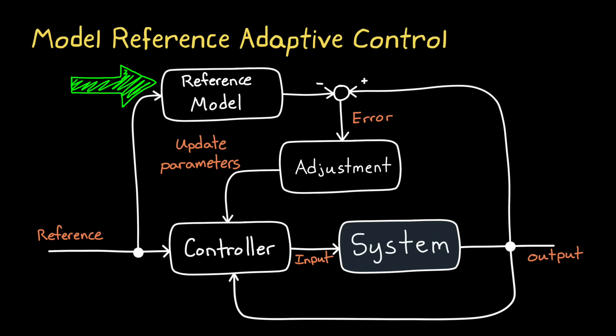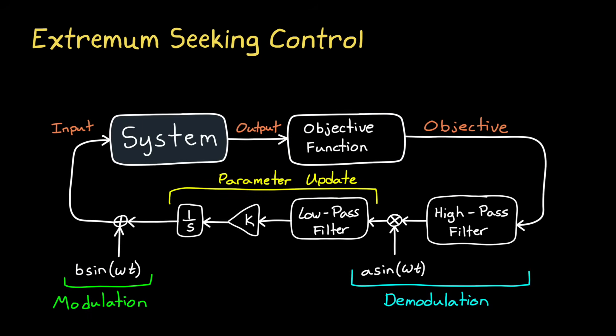For example, with Extremum Seeking Control, the goal is defined as an objective function that you want to maximize. So instead of changing the controller parameters based on the output of the system, Extremum Seeking Control is trying to adjust the parameters to generate the largest objective value that it can. And it does this in a really ingenious way.